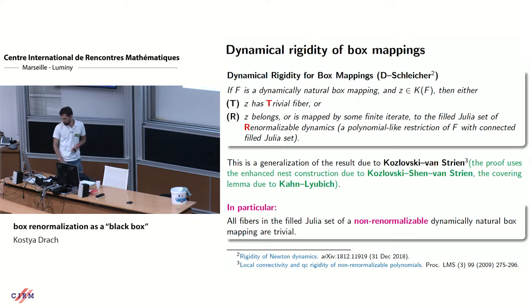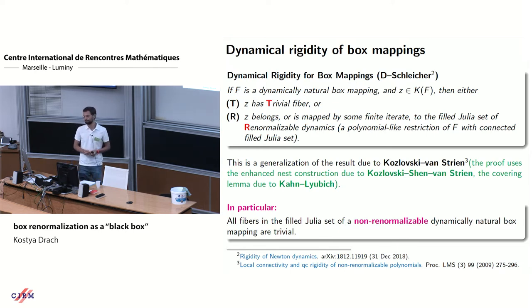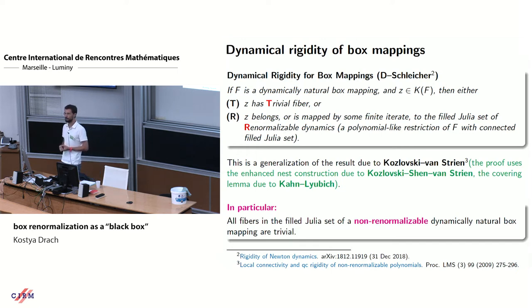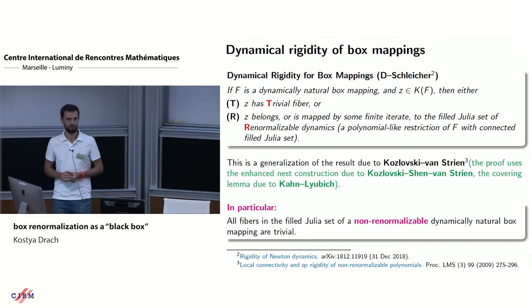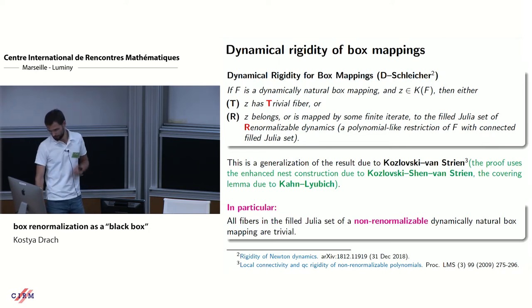In particular, if the box mapping is non-renormalizable, we can conclude that all fibers are trivial. This is a trivial corollary.